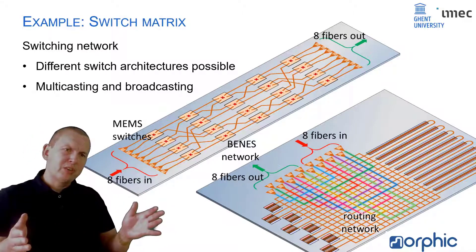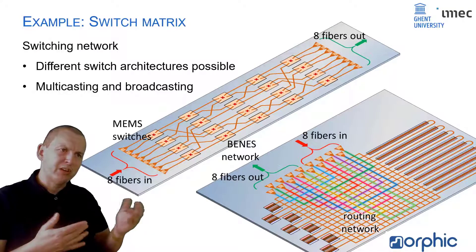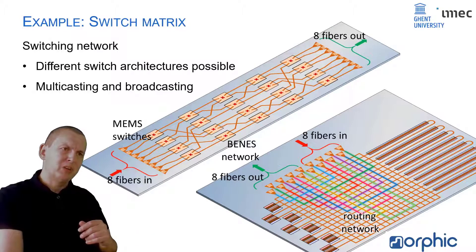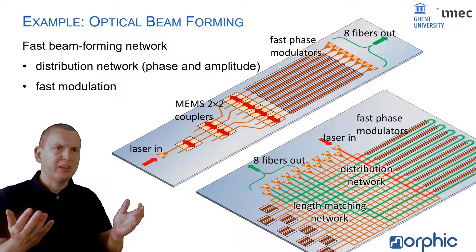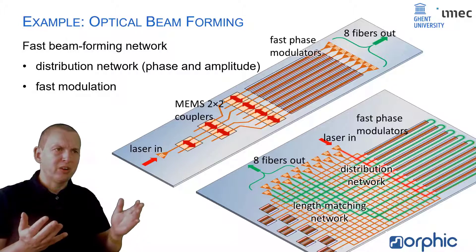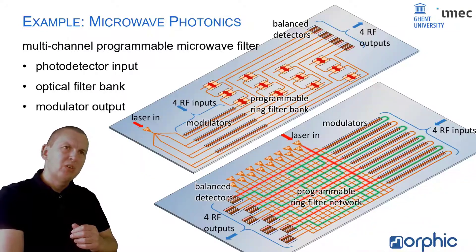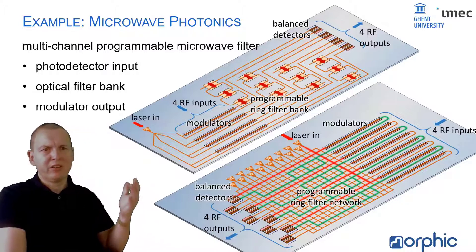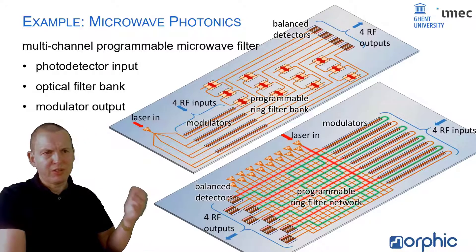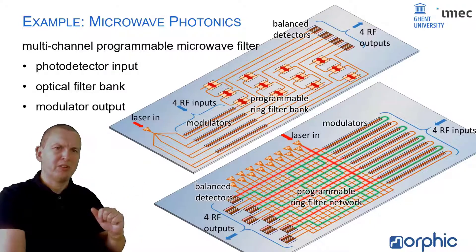It doesn't stop with transceivers. You can also use these to implement a switch matrix linking all ports together, or use a beamforming network for LiDAR to scan a laser beam in free space. You can even use it as a microwave processor, where signals coming in are not optical but electrical — high-speed signals come in, high-speed signals go out, but all the processing internally is done in the optical domain.